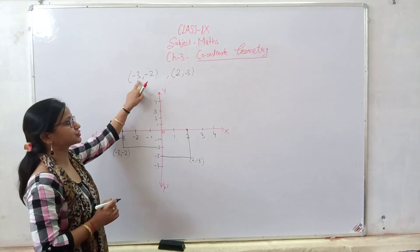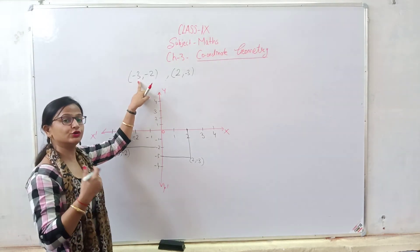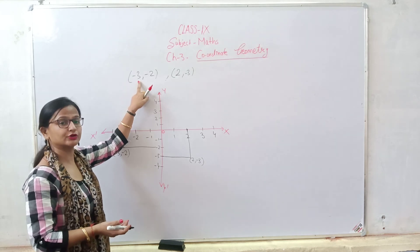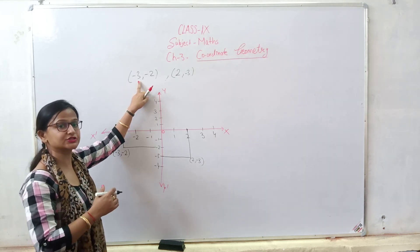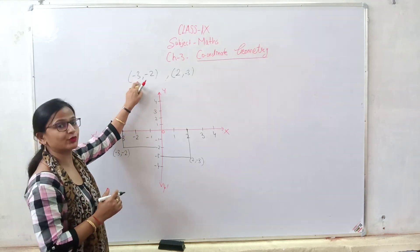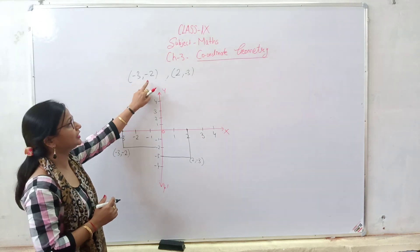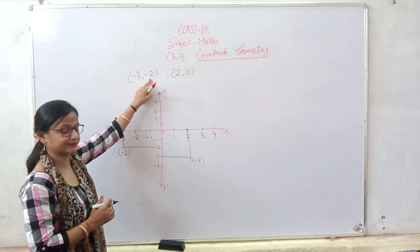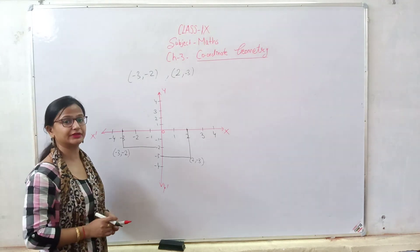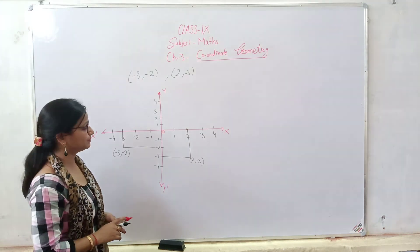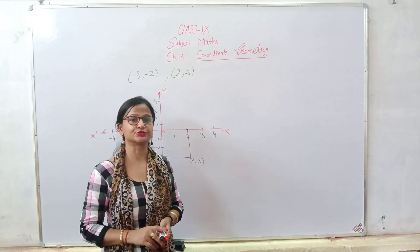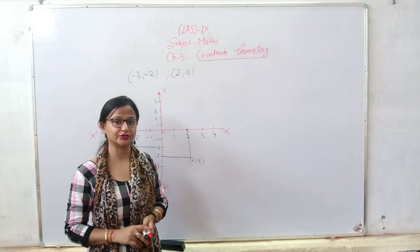Again, the first coordinate you take on the x-axis, and they have given (-3,-2). This means the first point represents the x-axis and the second point represents the y-axis. Such type of questions can come in the exams. Hope these basics will help you to solve the problems. Thank you. Have a nice day.